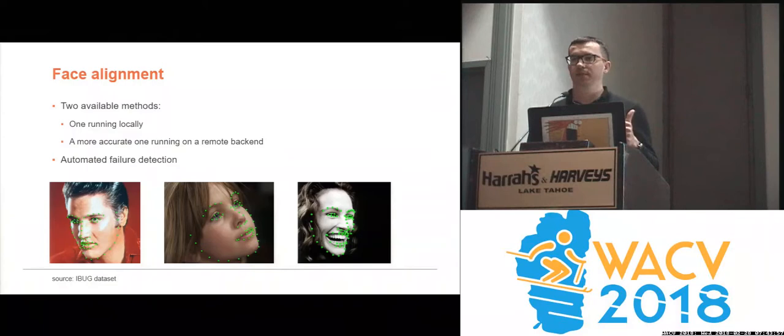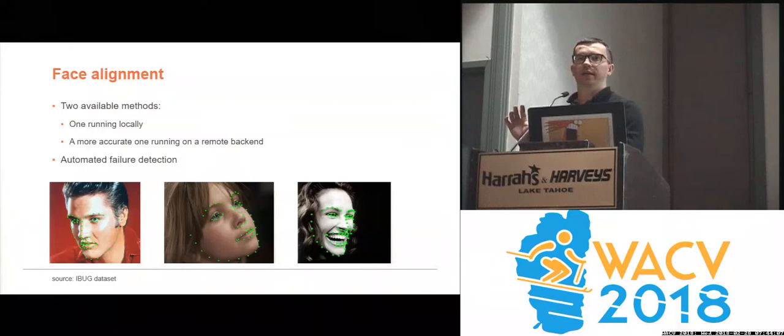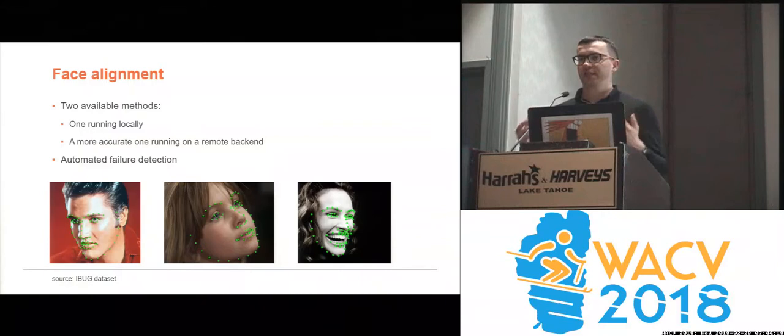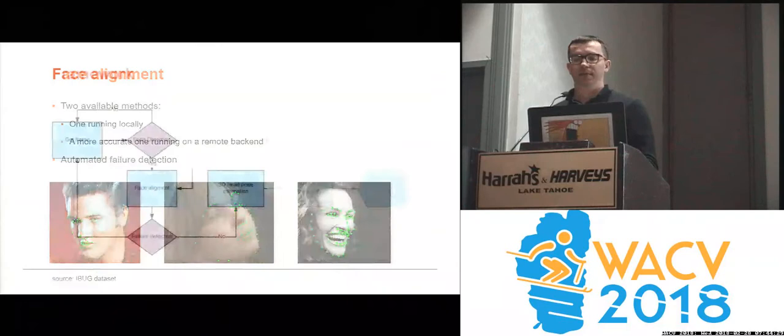This is done using one of two available methods. One is a simpler method which runs entirely on the device — HoloLens is a mobile, battery-powered, low-power device. The second is a state-of-the-art deep learning-based method that runs on a remote desktop computer to which the headset connects via Wi-Fi. The user can choose whichever method at runtime. Both face alignment methods are equipped with an automated facial failure detection method, which estimates whether the landmarks were located correctly or not.